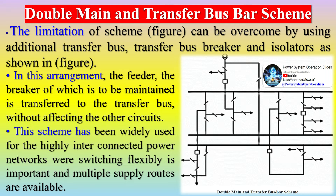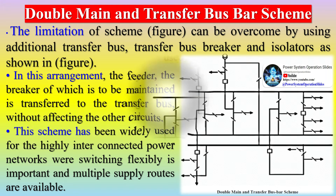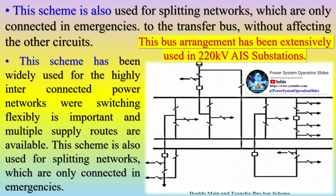The double main and transfer busbar scheme overcomes the limitations of the double busbar scheme by using an additional transfer bus, transfer bus breaker, and isolators. In this arrangement, the feeder whose breaker is to be maintained is transferred to the transfer bus without affecting the other circuits.